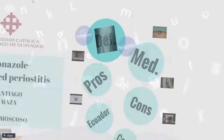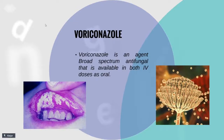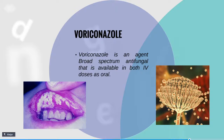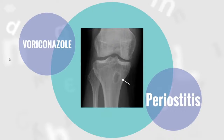Starting with the definition, we are going to see that voriconazole is a broad spectrum antifungal that is available in both IV doses and oral. This drug is used to treat fungal infections like infections of Candida.